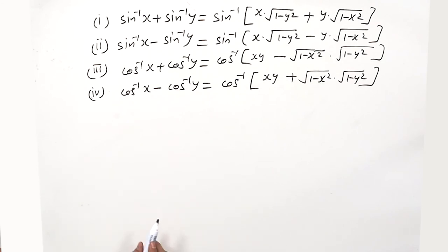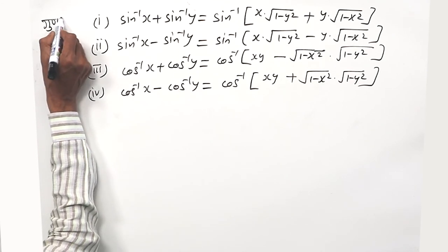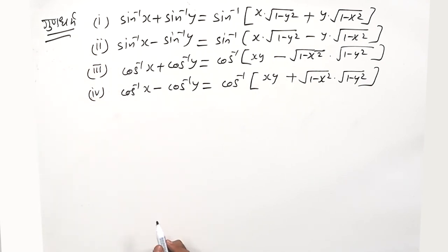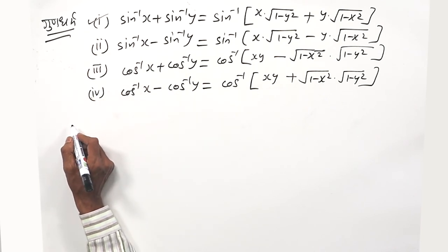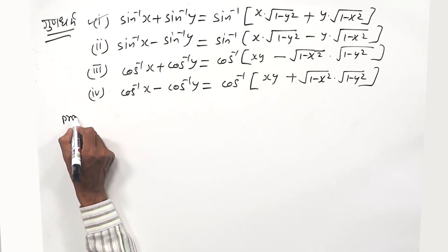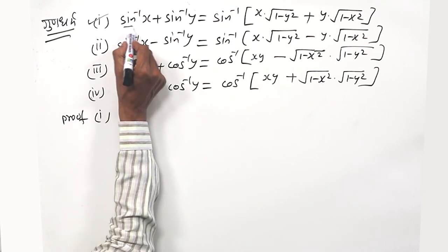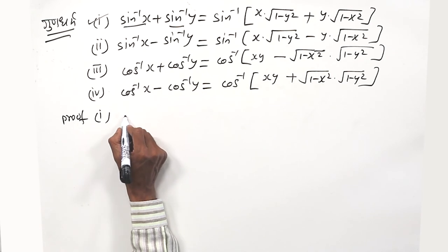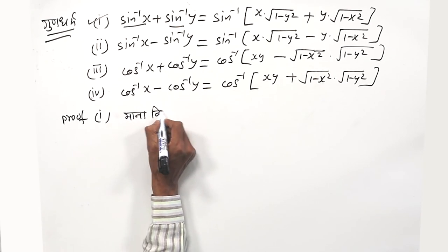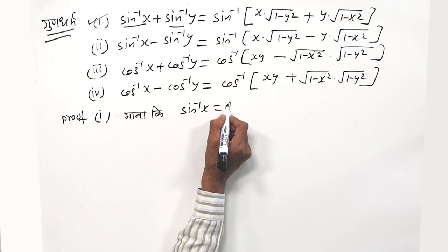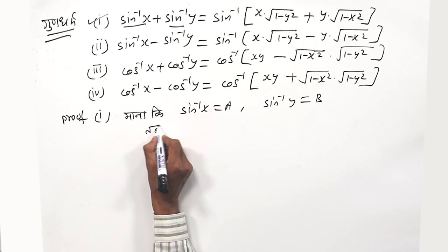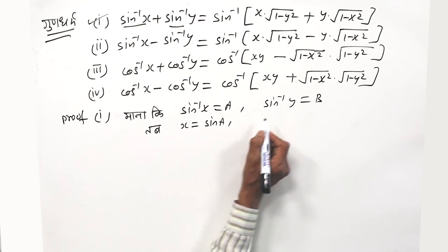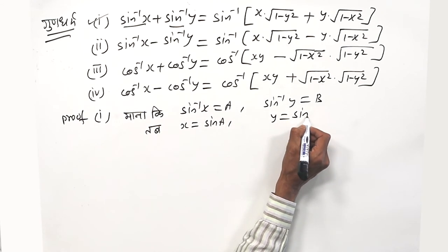Now children, remember this. Let's understand how it comes by proving it once. Let's prove the first one. Let sin⁻¹x = a and sin⁻¹y = b. Then x = sin a and y = sin b.